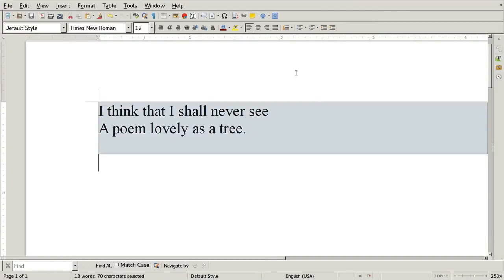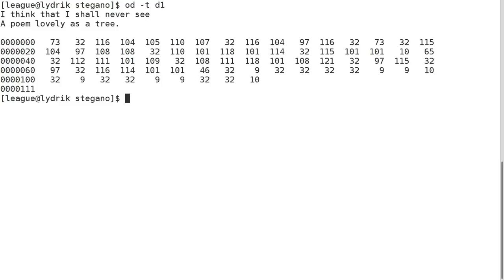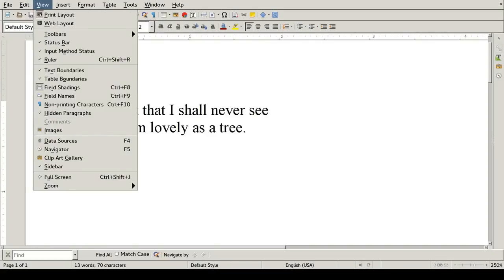Now the recipient of my document can paste it into any tool that shows the character encodings, and read off the characters. 32 is space for a zero bit, and 9 is tab for a one bit. Actually, you can probably do it right here in your word processor, with view, non-printing characters.